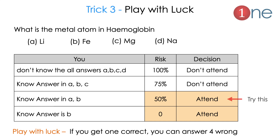Trick number three: play with your luck. Suppose the question is 'What is the metal atom in hemoglobin?' Options: A: Lithium, B: Iron, C: Magnesium, D: Sodium. If you don't know any answer at all, the risk is 100% — don't attempt. If you know one option is wrong — for example, sodium is involved in pumping blood, not hemoglobin — then D is not correct, but risk is still 75%, so don't attempt.